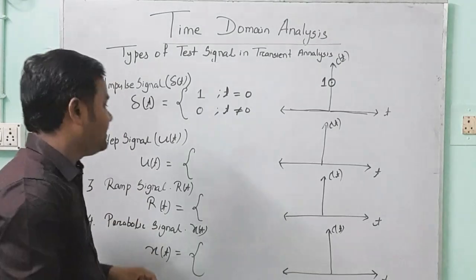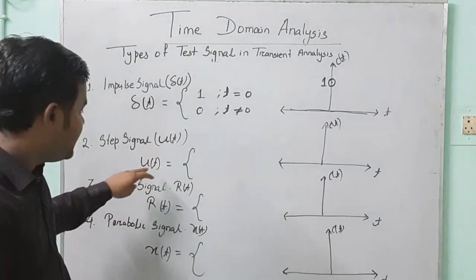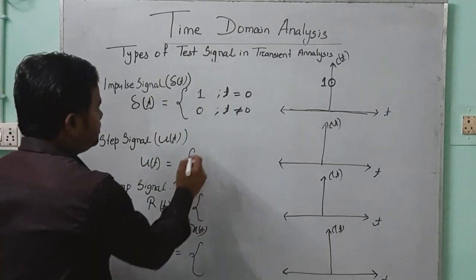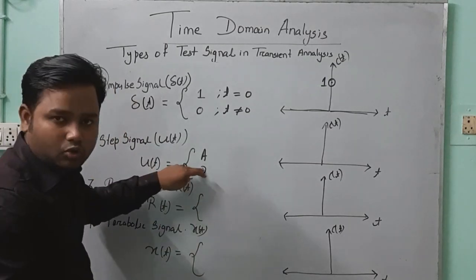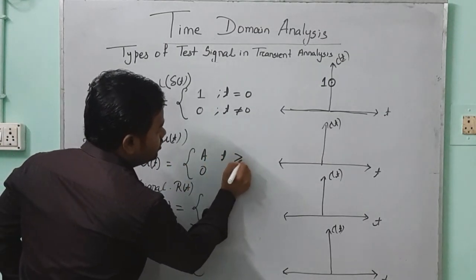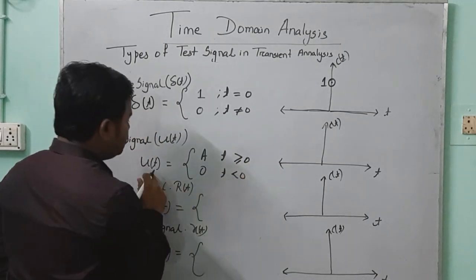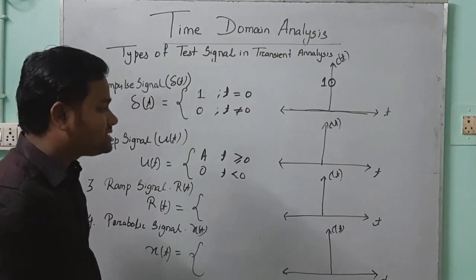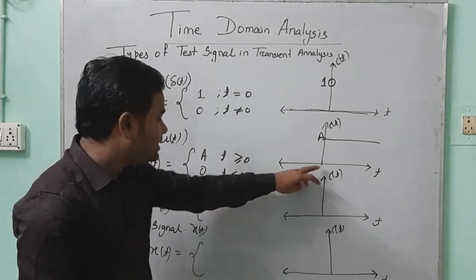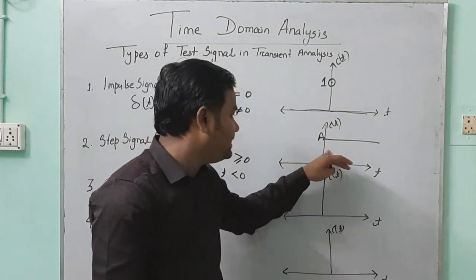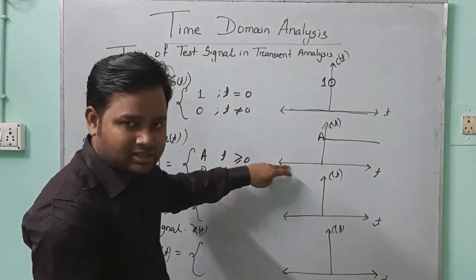Next is the step signal, denoted by U of T. The value of U of T is equal to a constant A when T is greater than or equal to 0, and U of T is equal to 0 for the rest of the time. Its graph shows the signal at value A when T is positive, and 0 for negative time.